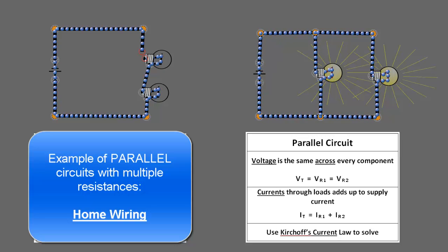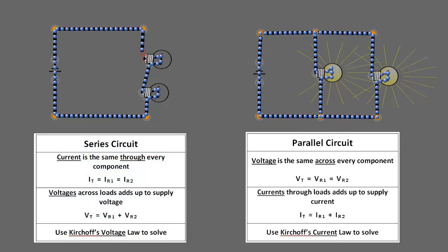Your home is connected in parallel because when you plug some new device in, you want that device to receive 120 volts. And in a parallel circuit, the voltage for all the loads is whatever the battery voltage is, or the supply voltage.